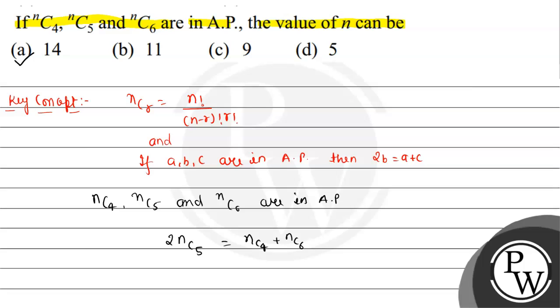So using the concept, we have found the value of N given that NC4, NC5, and NC6 are in AP. Hope you understood it well. Best of luck!